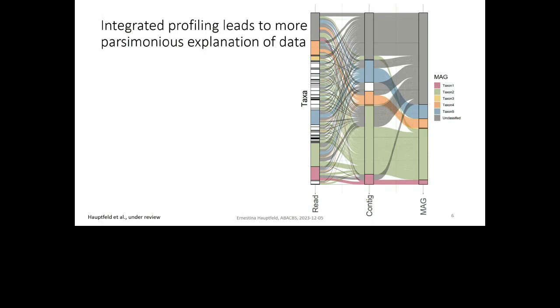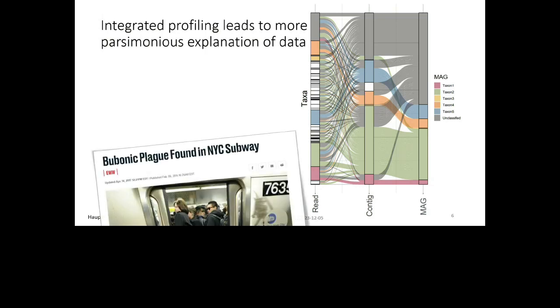So we will not find many of the taxa that are actually supposed to be there. Now, if we do this with contigs, then we include more of our data, because contigs represent a larger fraction of the reads that are in the sample, and we'll find some more organisms, but we'll still be ignoring up to 20, 30% of our reads on average. Now, if we build a taxonomic profile based on the reads, then we are basing it on all of our data, on all of the reads. However, we will find a lot of noise, we will find a lot of organisms that are not actually supposed to be there. Like, in this news article, where people claim to have found plague bacteria on the subway in New York City.